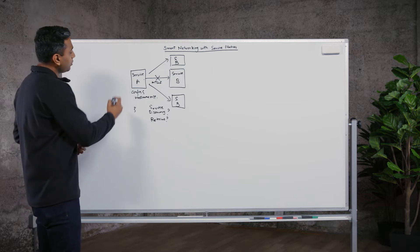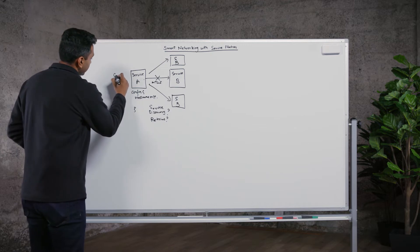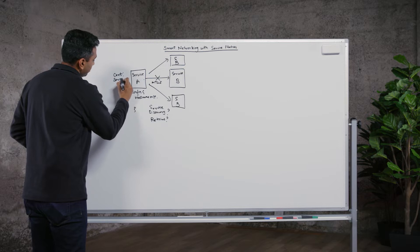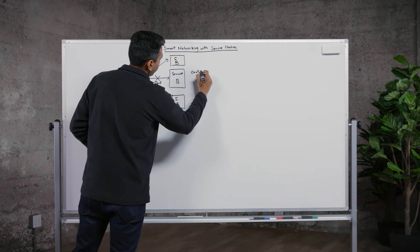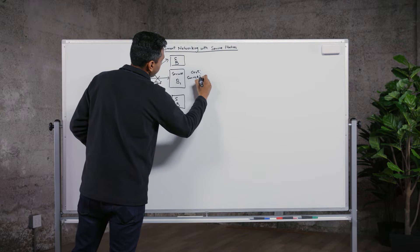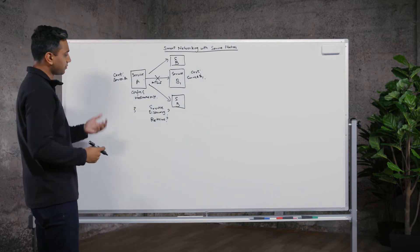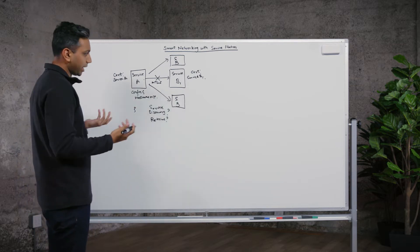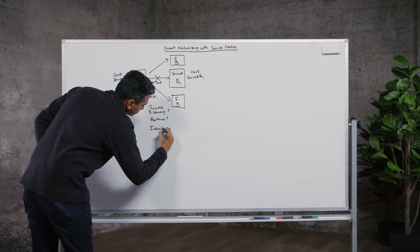To do that, you have an identity problem. Each service needs to be given a unique identity. So in this case, service A might get a certificate called service A, and this instance of service B might get a cert — let's call it B1, service B1. So you have to distribute these certificates across different instances of services, whether they're running on bare metal, VM, or a container. So you have this identity problem.